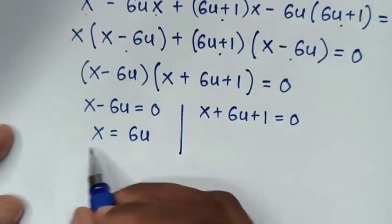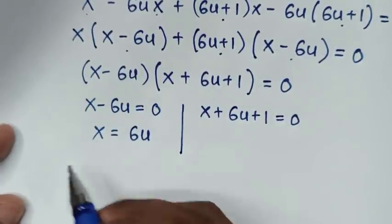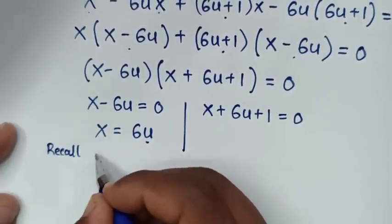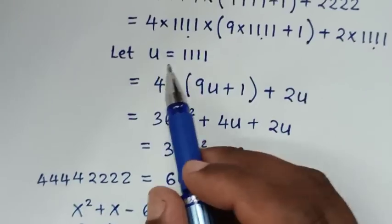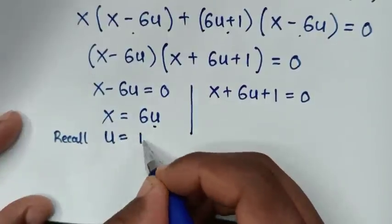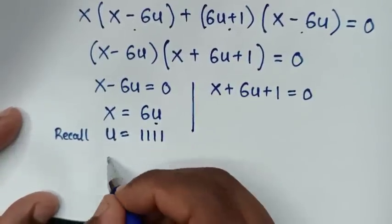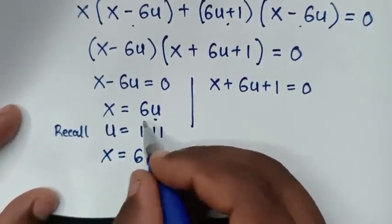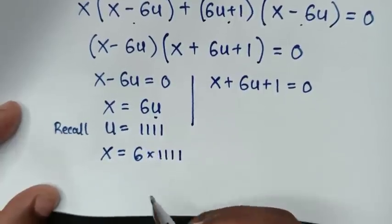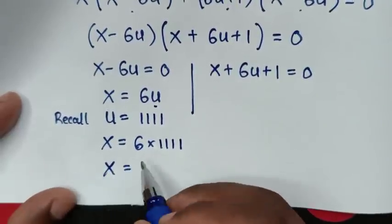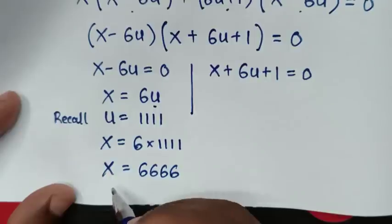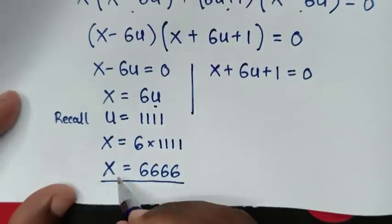From x equals 6u, we recall that u equals 1111. So x equals 6 times 1111, which gives x equals 6666. This is the first value of x.